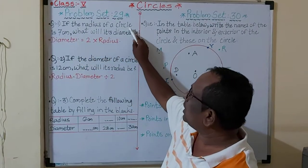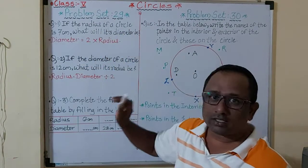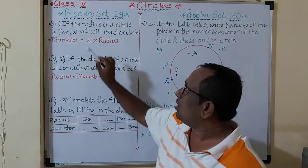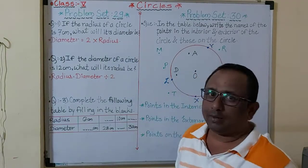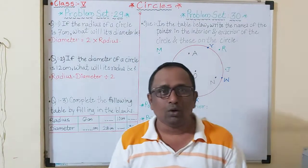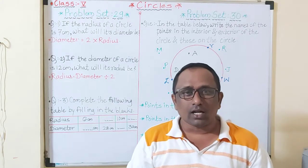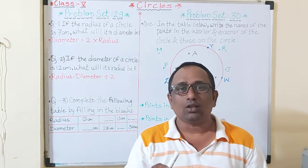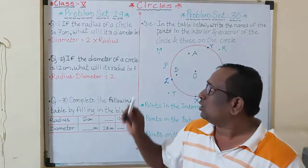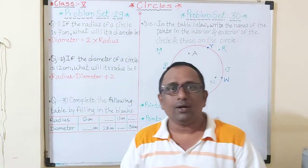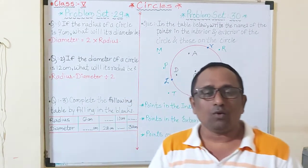The first example: if the radius of a circle is 7 centimeters, what will its diameter be? We have to find the diameter. We know the diameter of a circle is twice the length of the radius. These things I gave in the notes — students, you have to read the notes.